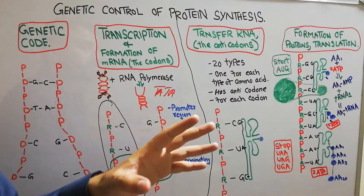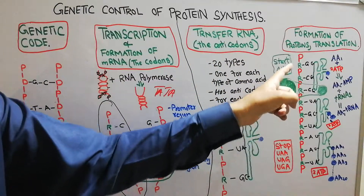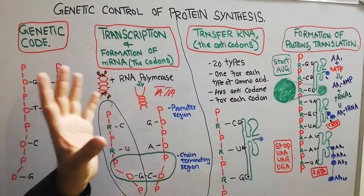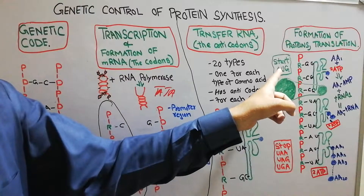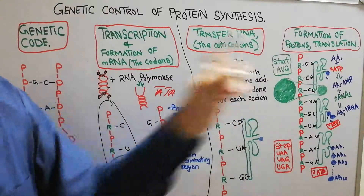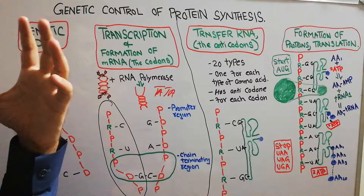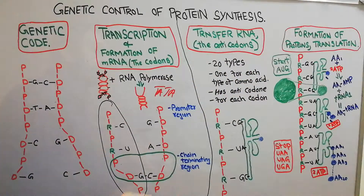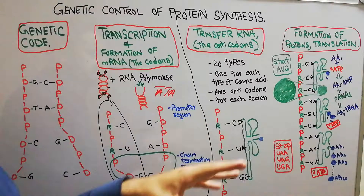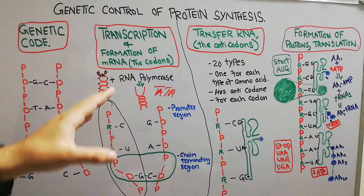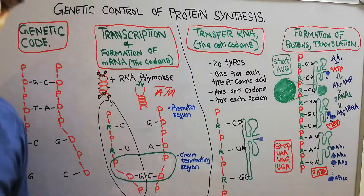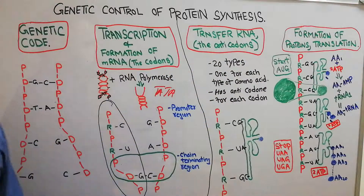There are two specific sites on the messenger RNA: a starting portion, which is normally formed of AUG — adenine, uracil, guanine — and a stopping portion. We need a starting point as well as a stopping point because we need a specific, not unlimited, amount of protein to be coded by the messenger RNA.